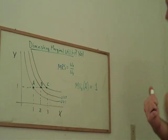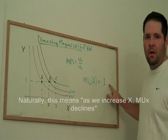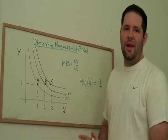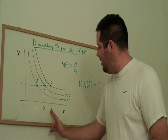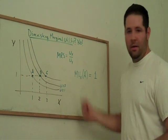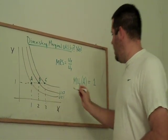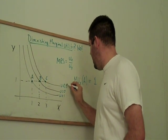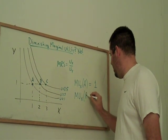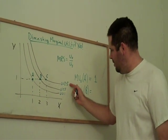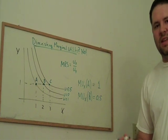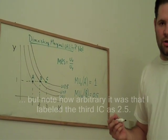What do we need to do to establish diminishing marginal utility? It turns out we need to ask: if we add another x, does the label on this third indifference curve have to be bigger than 3 or smaller than 3? If it's something like 2.5, then the marginal utility of x at bundle B would be 2.5 minus 2, which is 0.5. And indeed, in this example, we have diminishing marginal utility.